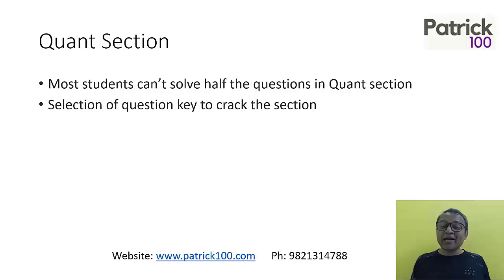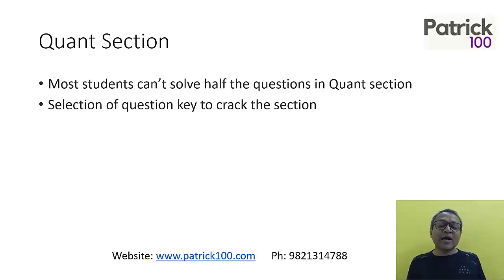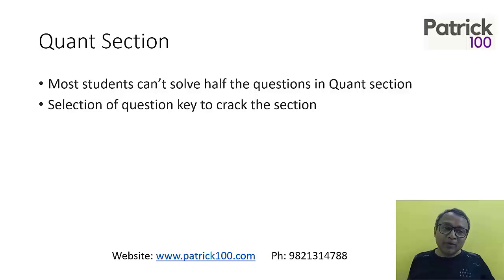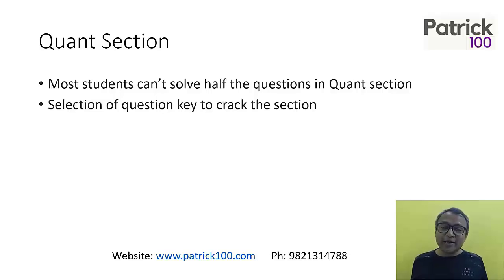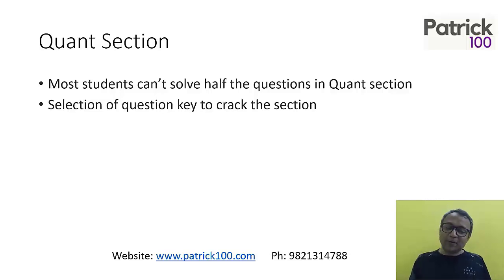Selection of questions is key to the CAT Quant section. If you are able to pick up easy questions and solve even three or four of them, you can crack the exam. For example, in CAT 23, people who solved three questions correctly got 80 percentile, and people who solved four questions correctly got 90 percentile. The key was to identify the easy questions and get them right.